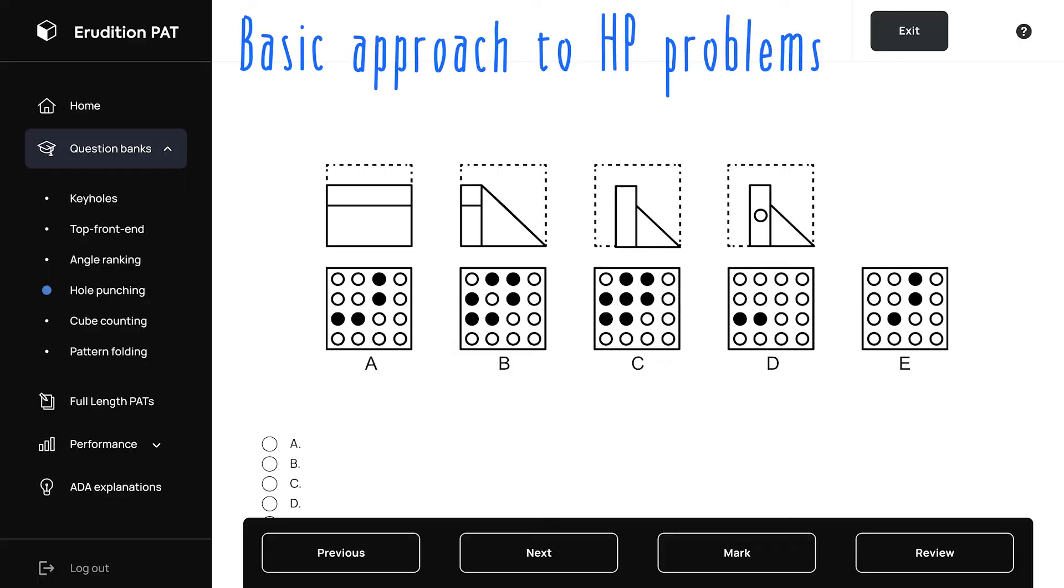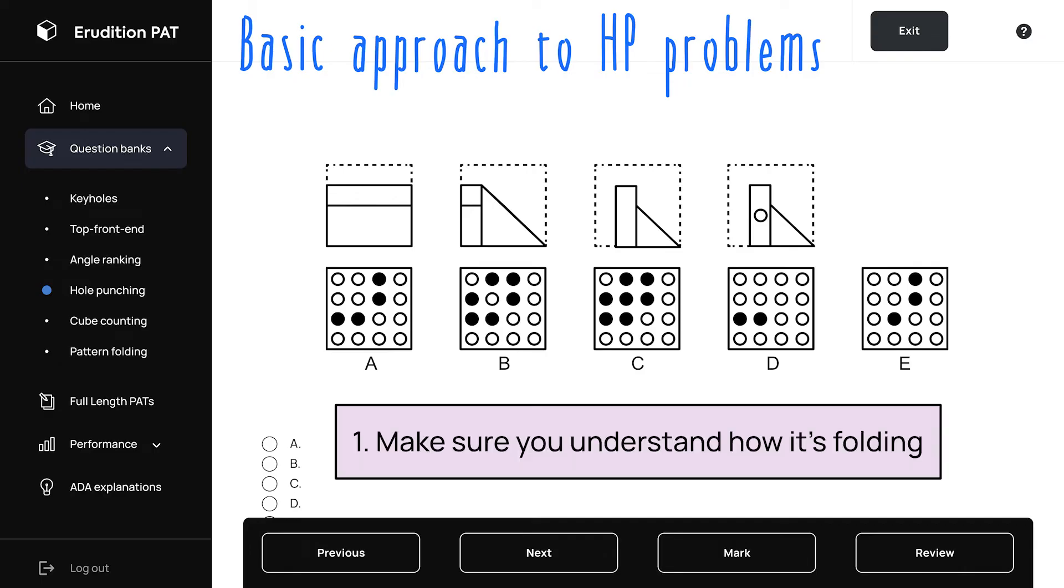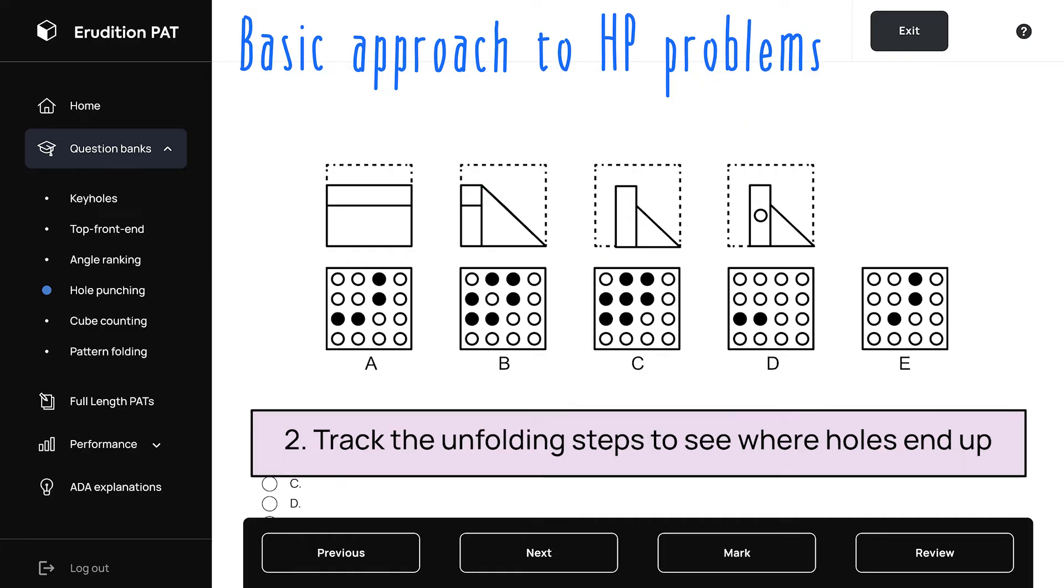But for now, let's go through the basic approach to solving hole punching problems. When you're looking at a problem like this, you want to make sure you understand how it's folding. Here we can see that the paper is folded down. Then there's a diagonal fold. Then there's a vertical fold here. After this, you want to track the unfolding steps backwards, visualizing how it would unfold and where each of the holes would end up.